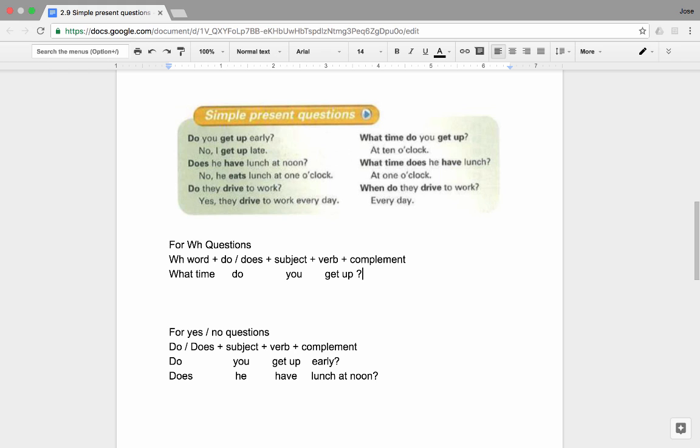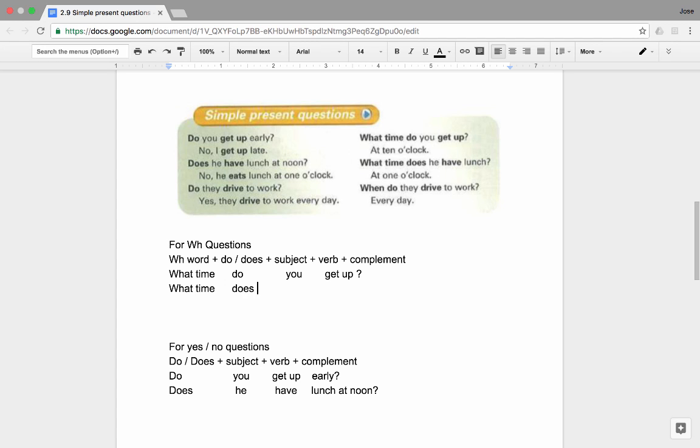And let's just analyze one more example. What time does he have lunch? What time is the WH word. Does is the auxiliary. He is the subject. Have is the verb. Lunch is the complement.